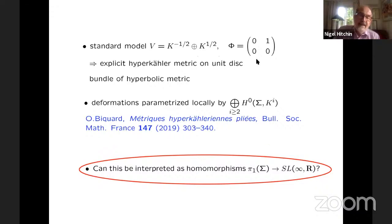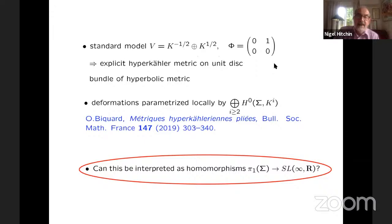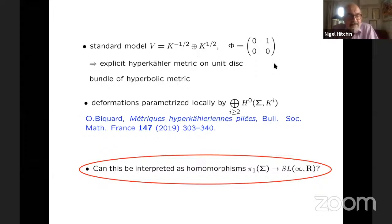So the point is that if we take the standard model — the simplest possible model — which is basically the Higgs bundle version of the constant negative curvature canonically associated to the holomorphic structure on sigma, then you can work out very easily this hyperkähler metric. On the universal covering, it has a great deal of symmetry. For those who know about hyperkähler metrics, it's like a different form of the Eguchi-Hanson metric.